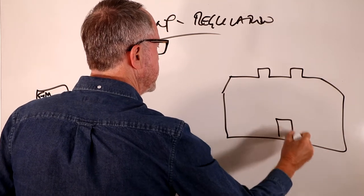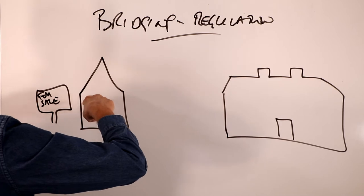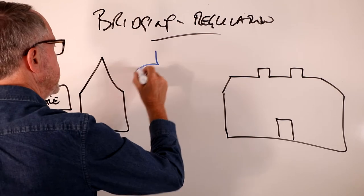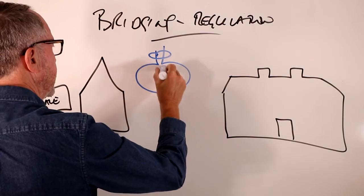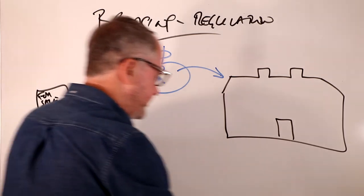You found this mansion that you want to purchase, but you can't buy that until you've sold this place. So what happens is you come along and the bridging lender will lend you some money, so you can buy that house without selling that one. That's known as bridging finance.